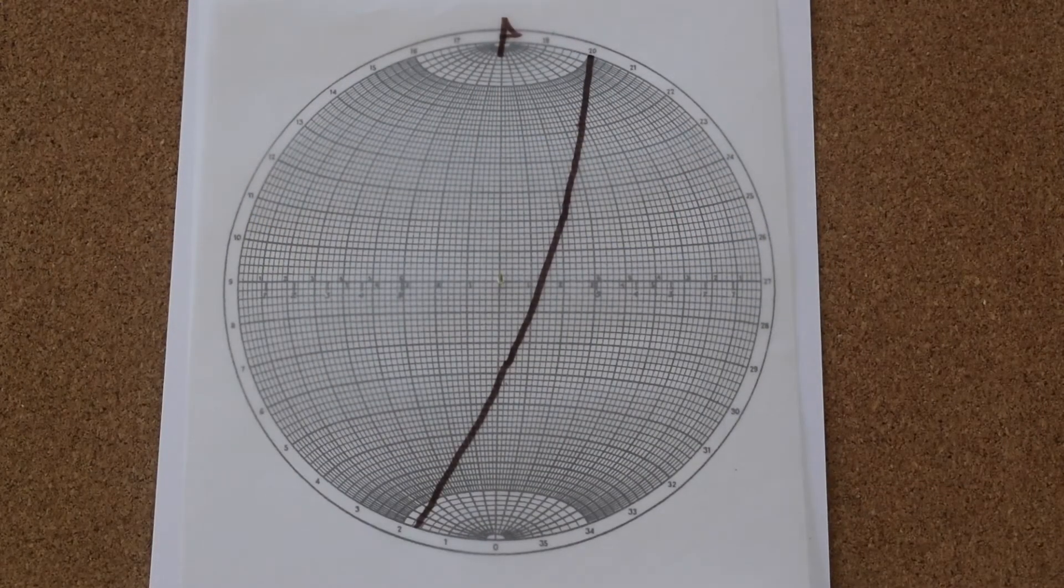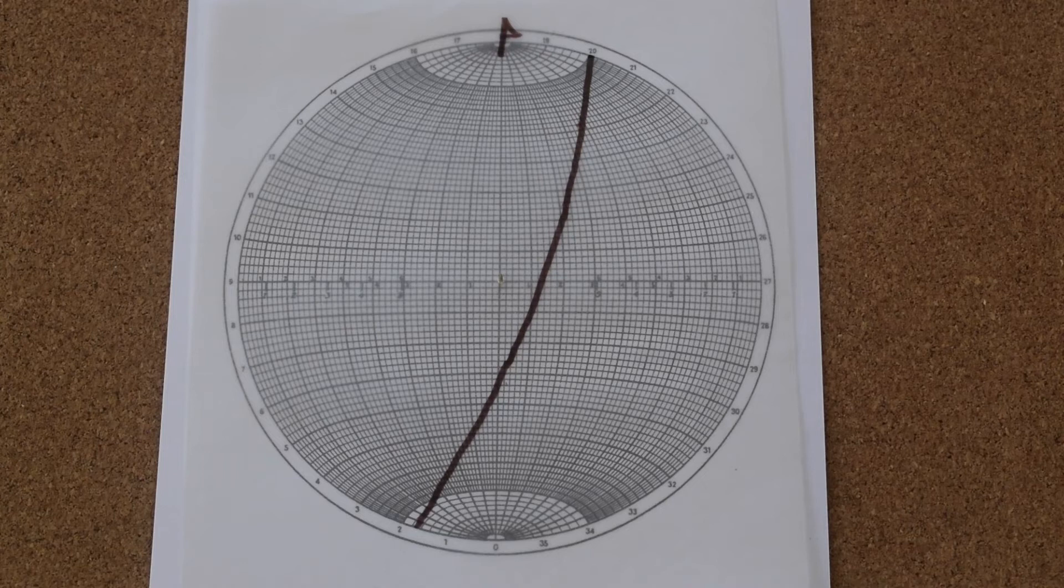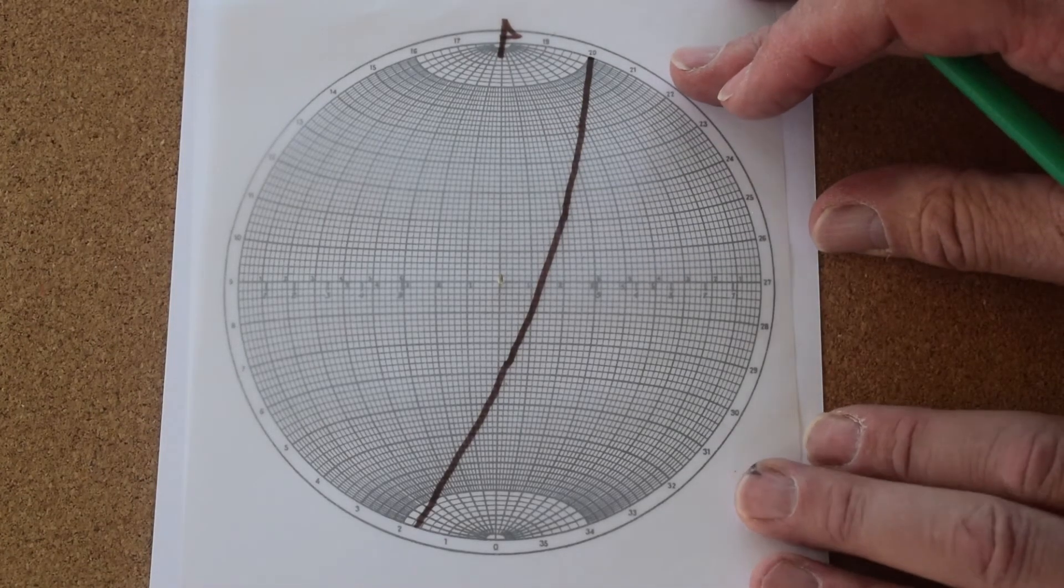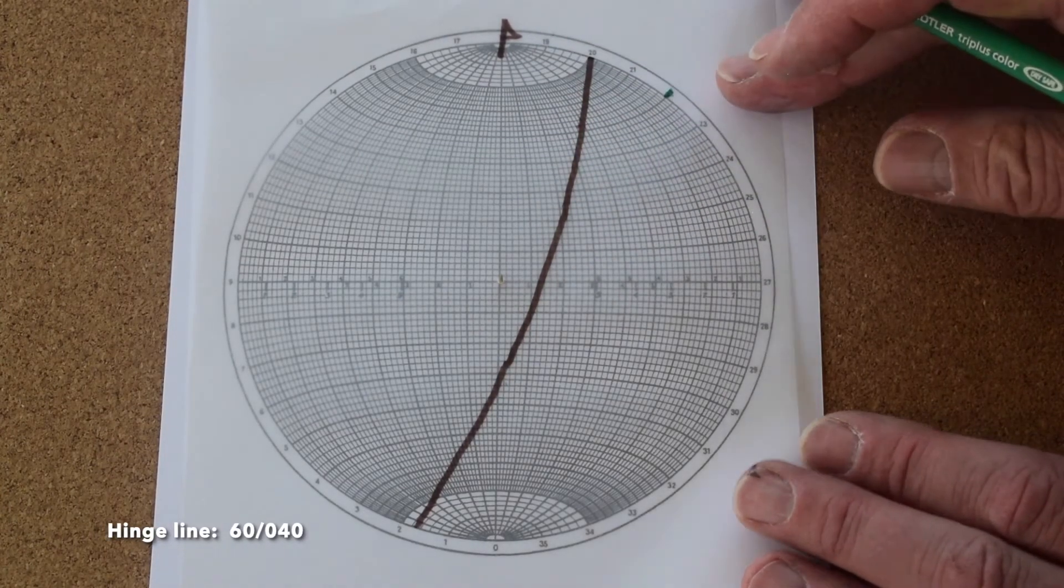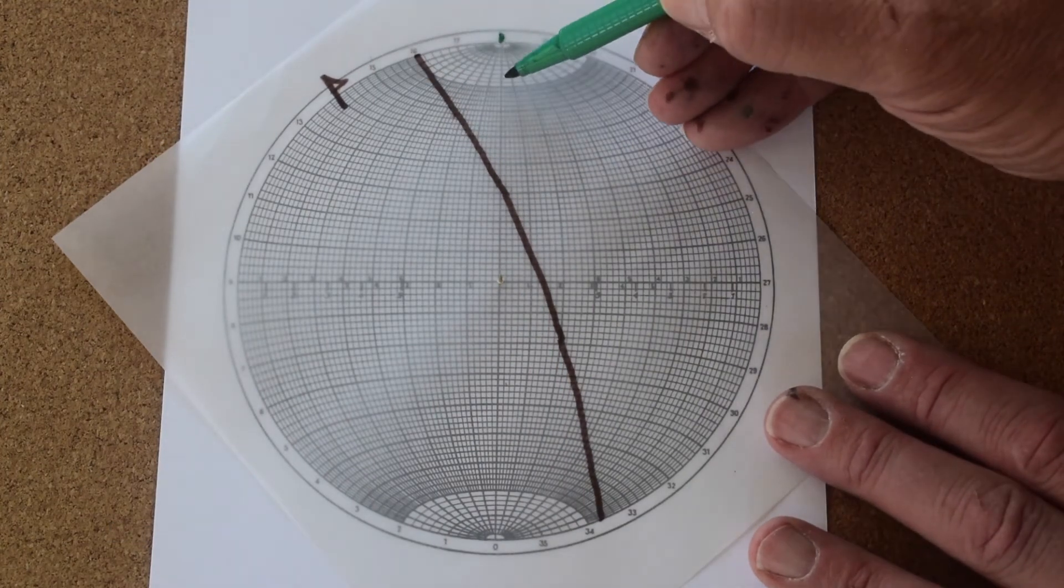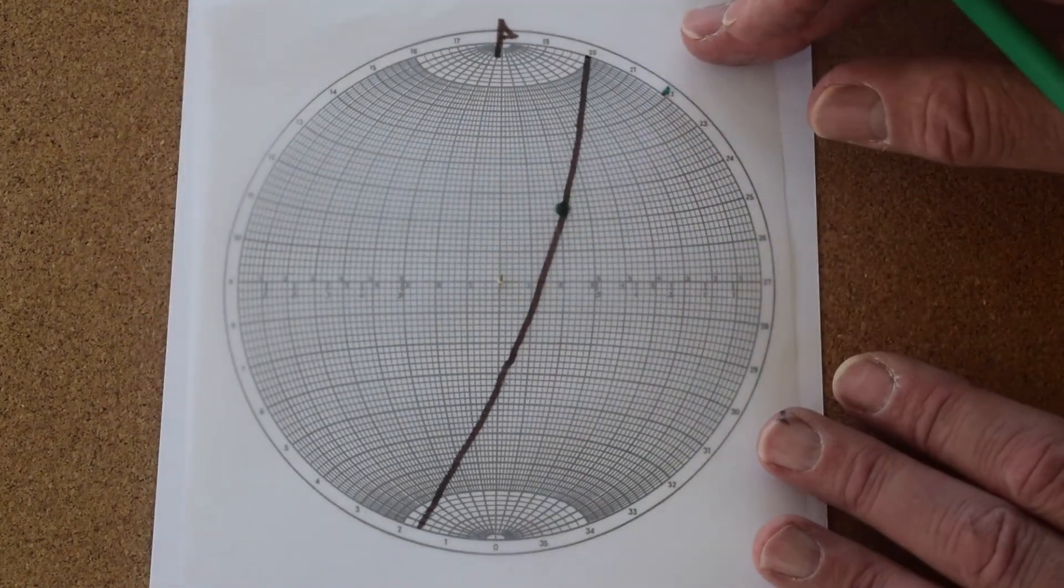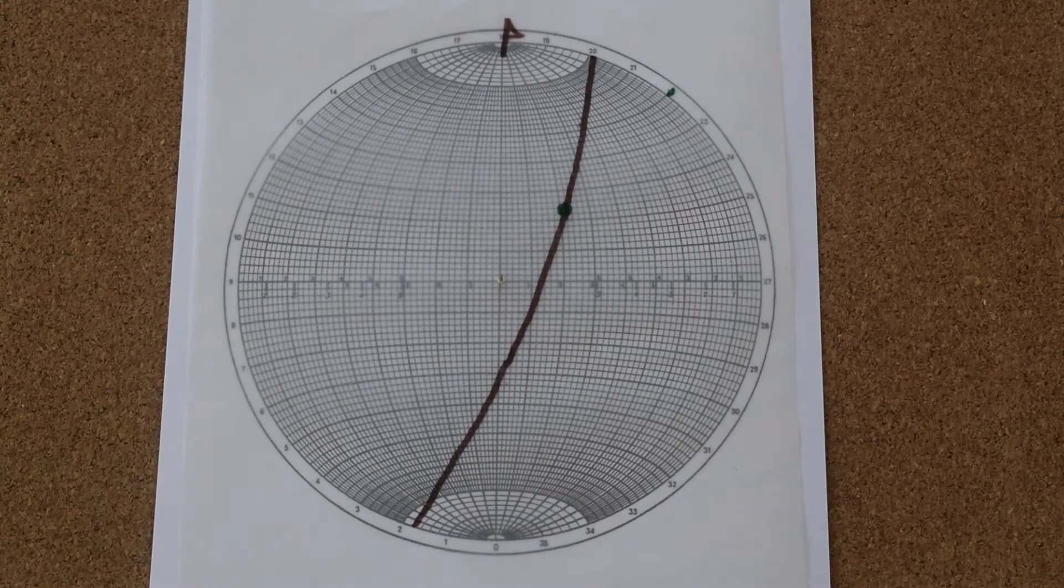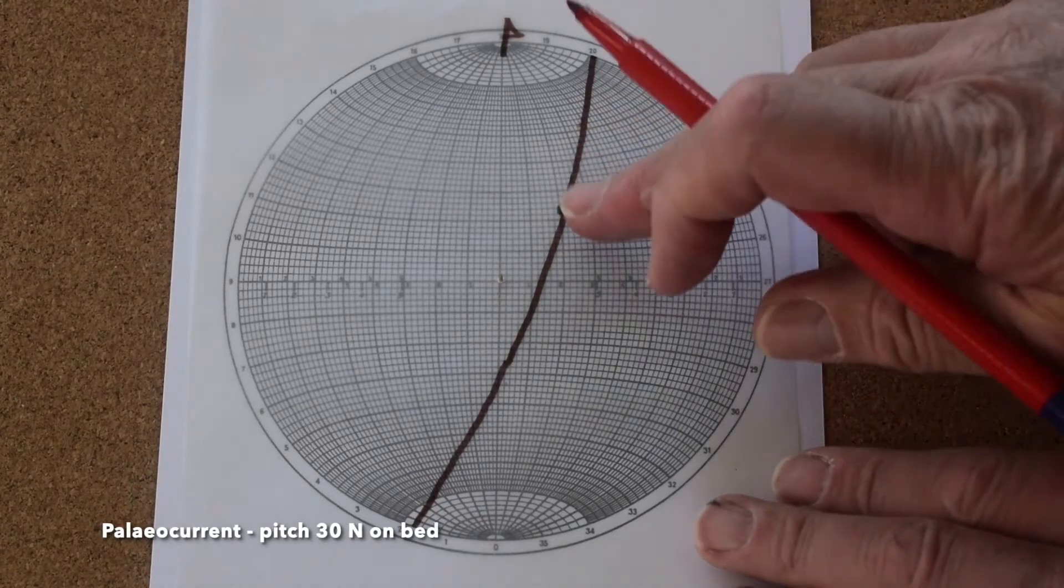Let's just look at another paleocurrent indicator using the same bedding and fold data and just look at how we have to deal with this when it plots in a different part of the stereo net. So there's our bed. And let's just put on the fold hinge line, which plunged 60 degrees towards 040. So there's the fold hinge line. And now what we're going to do is put onto this the orientation of a different paleocurrent. And this time we'll plot it up in this area here to see what happens. So let's go for a paleocurrent that's pitching 30 degrees north on this bedding plane, 20, 30. So there is our paleocurrent.